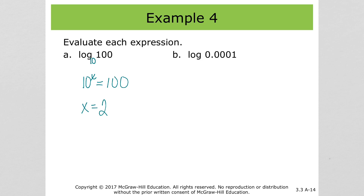This is log base 10 of 1/10,000. Rewrite that as 10 to the x equals 1 over 10,000. Well, it's going to have to be negative to put it on the bottom of the fraction. And 10 to the 4th gives us 10,000 — if you're not sure, play around with your calculator until you find the right number. So 10 to the negative 4 would give us 1 over 10,000.